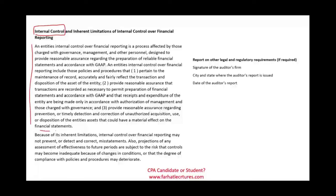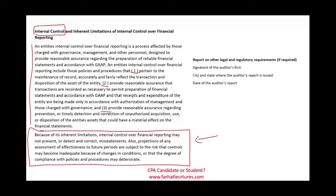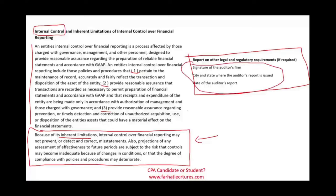The inherent limitation paragraph tells users that although internal control is working now, it may not work in the future, and we could have made a mistake — there is always a possibility of error. Don't read too much into the opinion; there are always inherent limitations with internal control. Finally, we include a paragraph on other legal and regulatory requirements if needed, followed by the auditor's signature, date, city, and state.